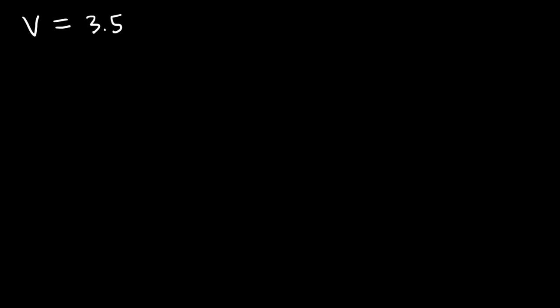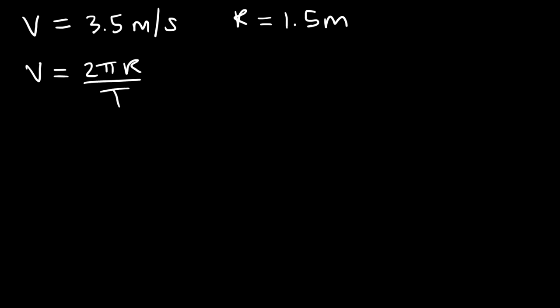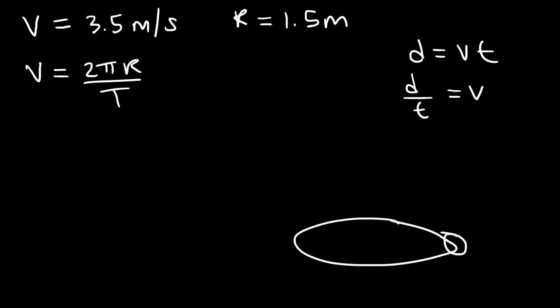By the way, what is the period and frequency of this problem? Given the speed is 3.5 meters per second and the radius of the circle is 1.5 meters, how can you calculate the period and frequency? The equation that relates speed, radius, and period is v equals 2πr divided by T. Since the ball moves with constant speed, d equals vt, so v is d over t. Because the ball moves in a circle, the distance around is 2πr, and the time to complete one revolution is the period.